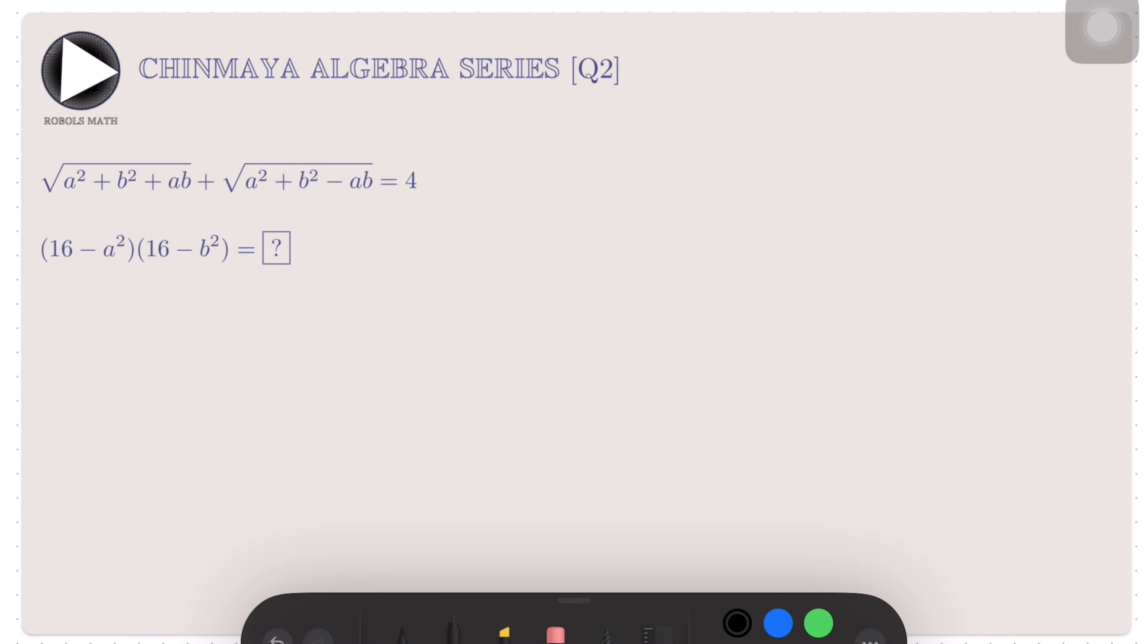This is the second episode of our Chinmaya Algebra series. If you haven't watched the first one, I suggest you do so first. For this video, we are asked to find the product of (16 - a²) and (16 - b²) given the sum of the square roots as shown is equal to 4.